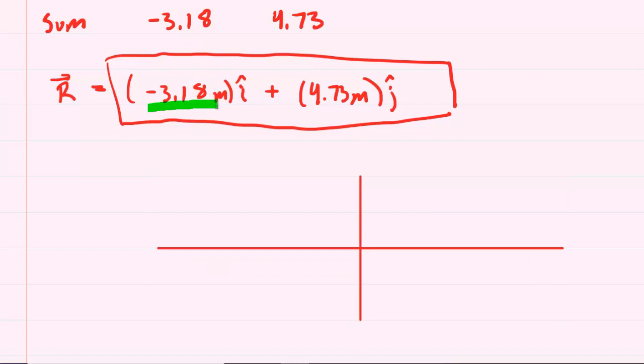We can see that the X component was negative 3.18. So you're going to start at the origin, and you're going to measure out a distance along the X axis of negative 3.18. So because it's negative 3.18, you'd be going this way here. So there we have negative 3.18.